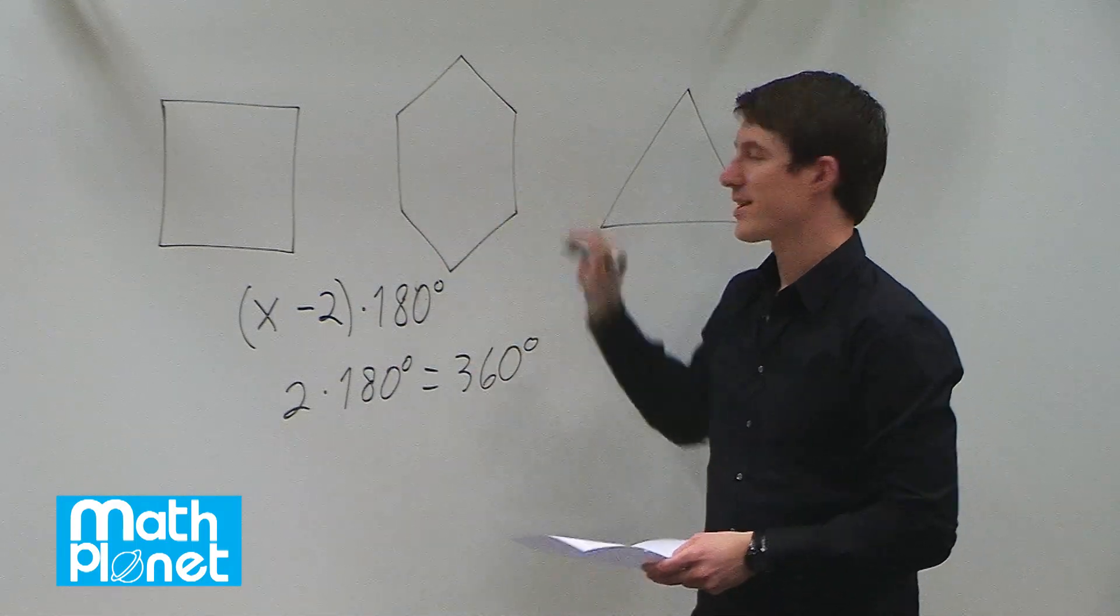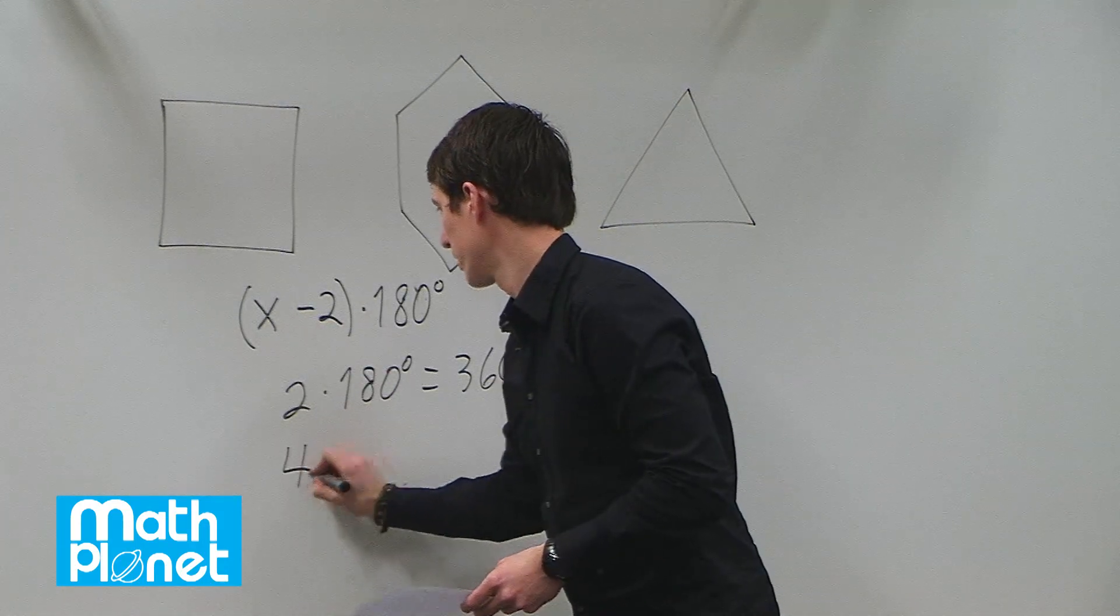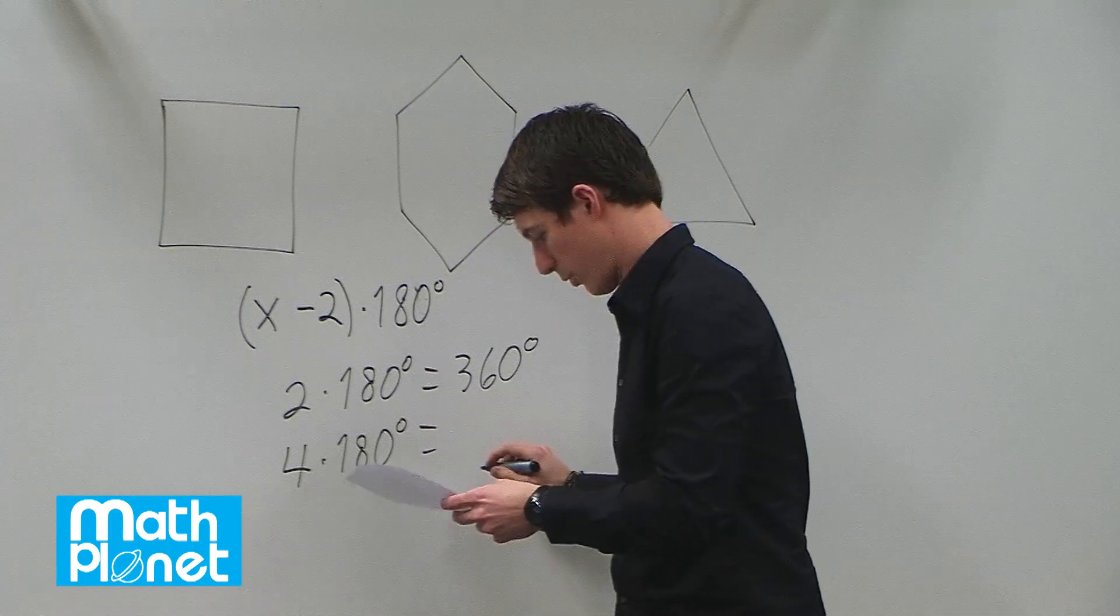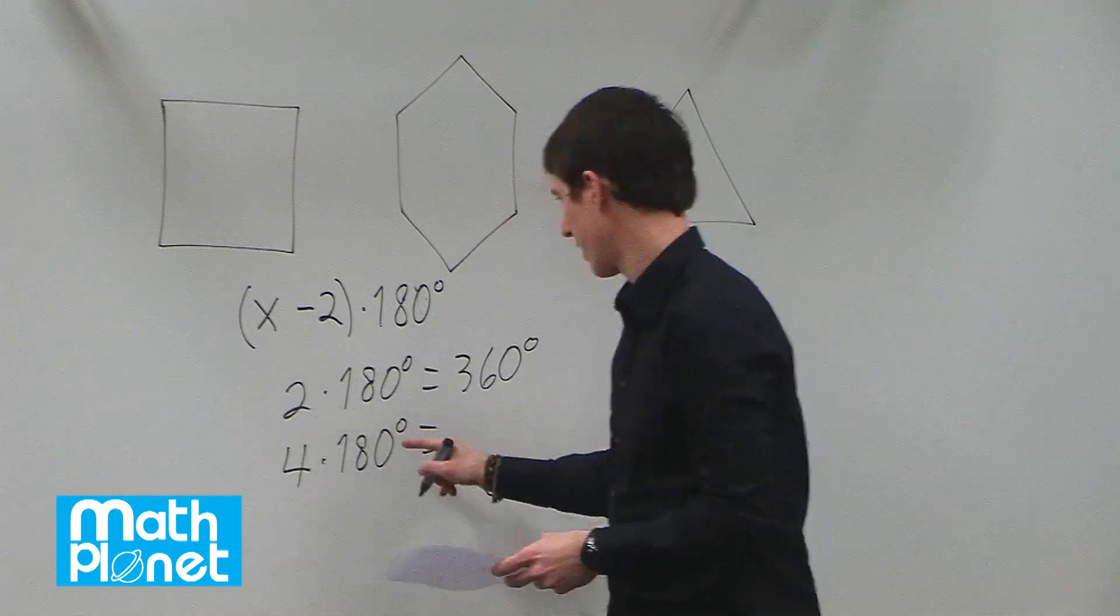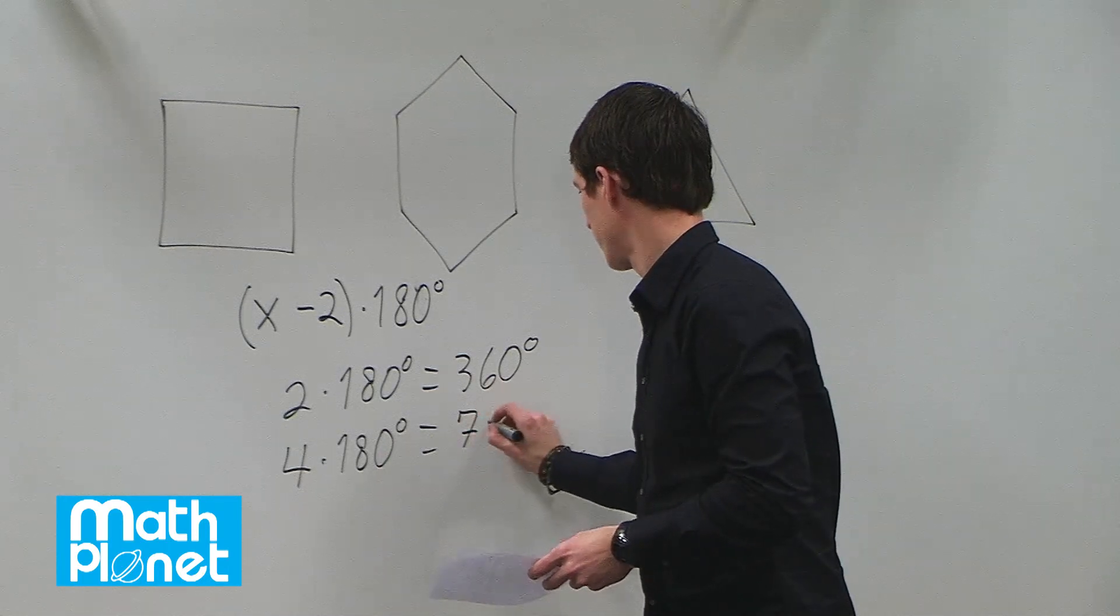For a one, two, three, four, five, six-sided shape we have six minus two, so four times 180. And four times 180 just gives us 360 times two which is 720.